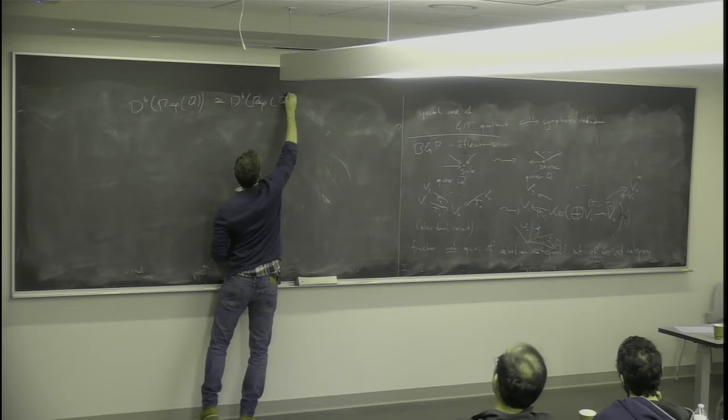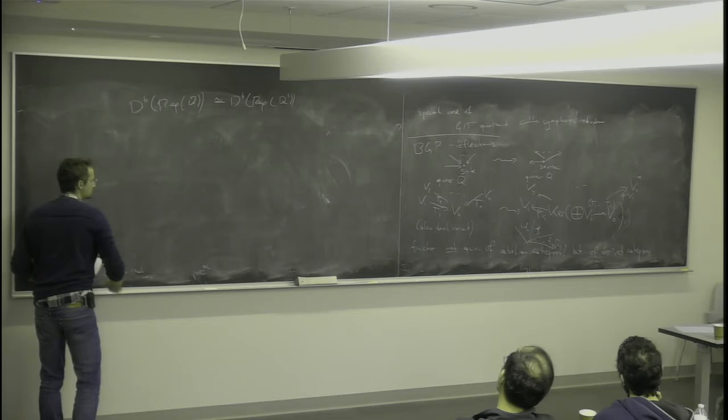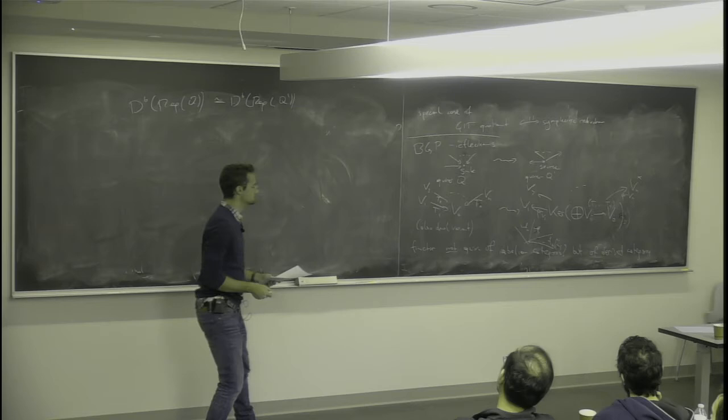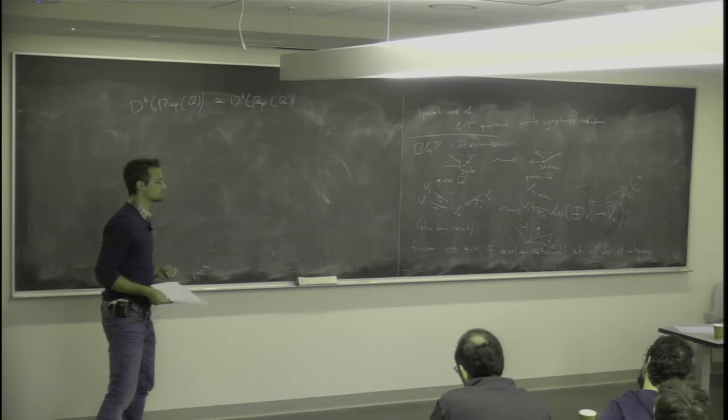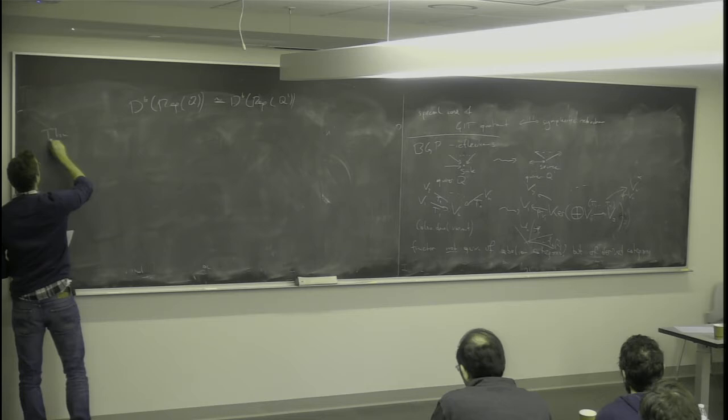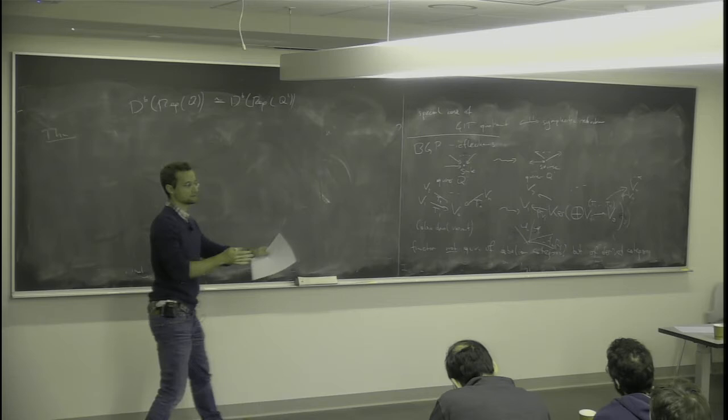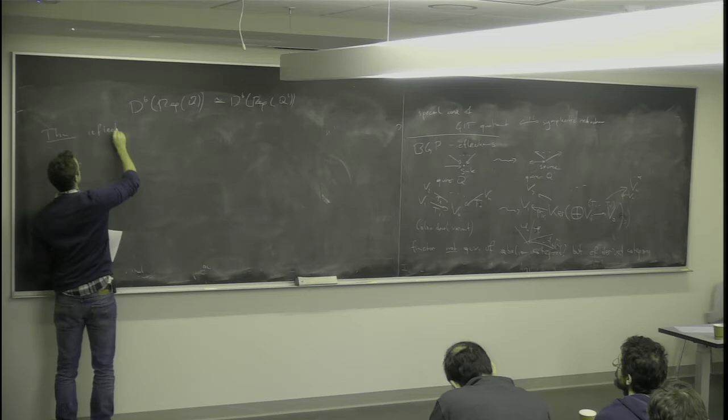In general if you have an abelian category you can take a torsion pair — slice it into two pieces — and this is a special case of that. If you have the heart of a t-structure in a triangulated category and a torsion pair in that t-structure, you can mutate it: take one end, shift it, and stick it on the other side. For our purposes what's interesting is that this equivalence of derived categories preserves the Kähler metric we get on the moduli spaces. The theorem is: reflection functors induce an isometry of these moduli spaces.